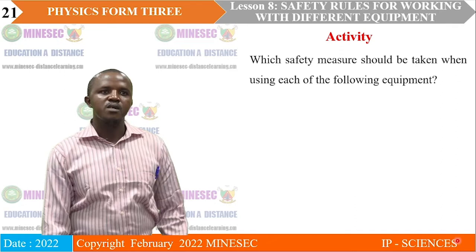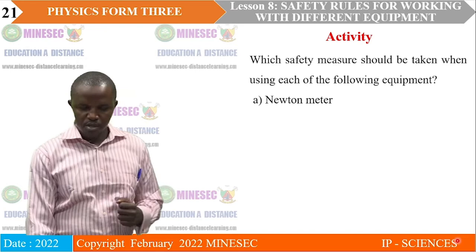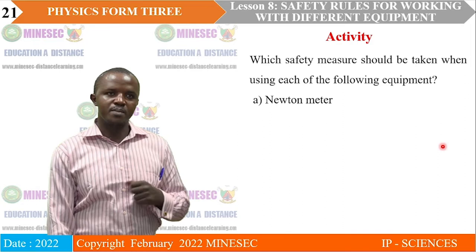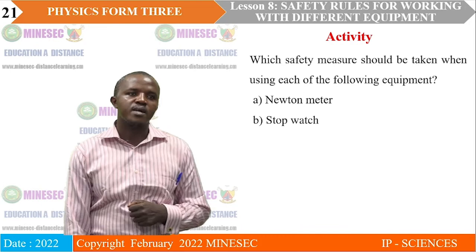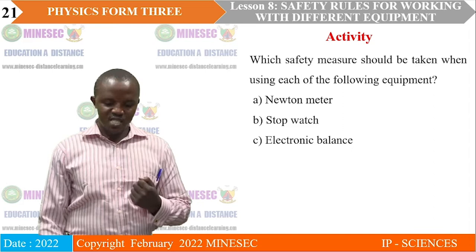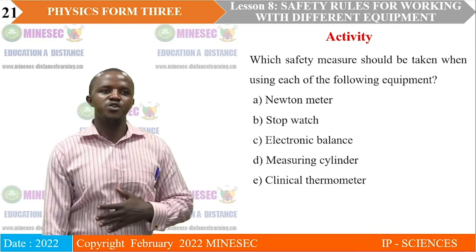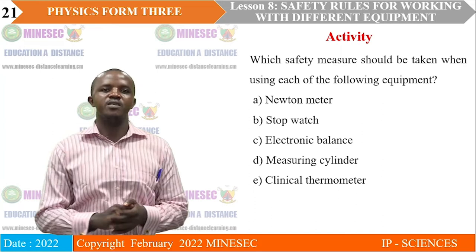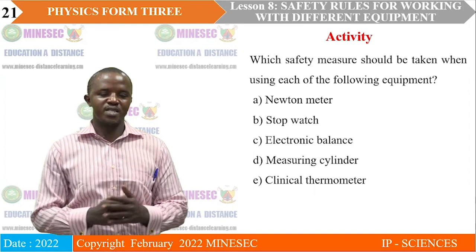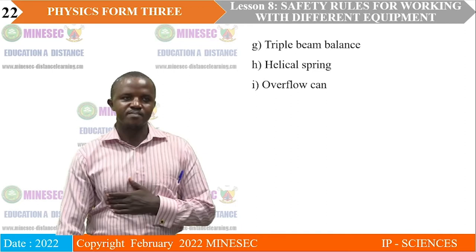The activity for our lesson: which safety measures should be taken when using each of the following equipment? We have a Newton meter — what are the safety measures involved? That's the stopwatch — what are the safety measures for using it? Then the electronic balance, the measuring cylinder, a clinical thermometer, the laboratory thermometer, the helical spring, the overflow can, and the standard masses. As we go through them, think about what those safety measures are and write something down.